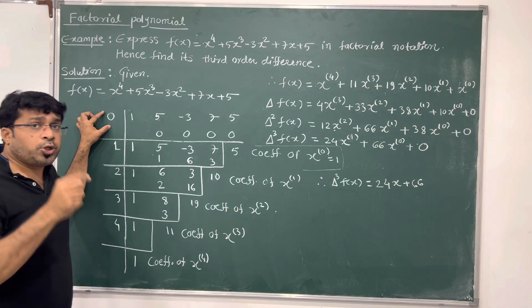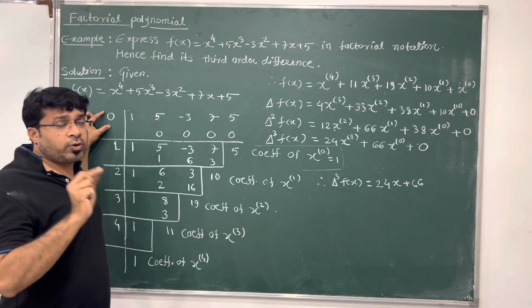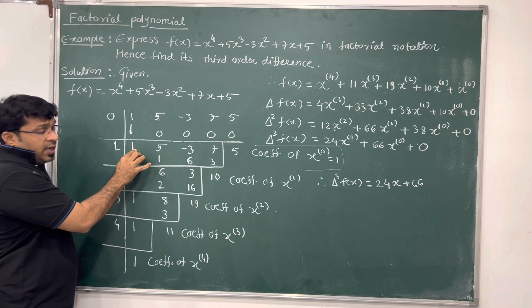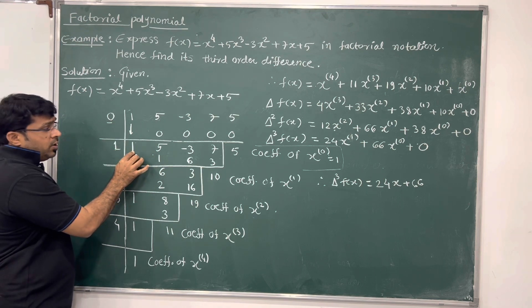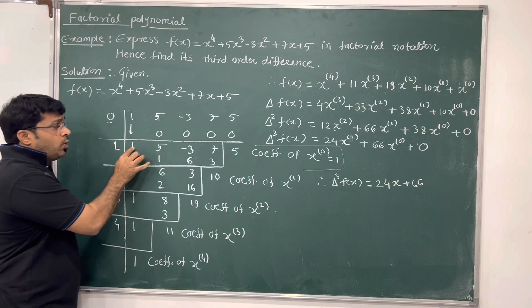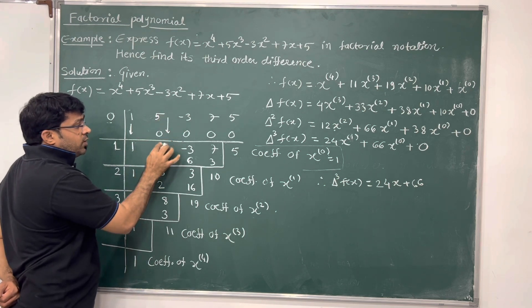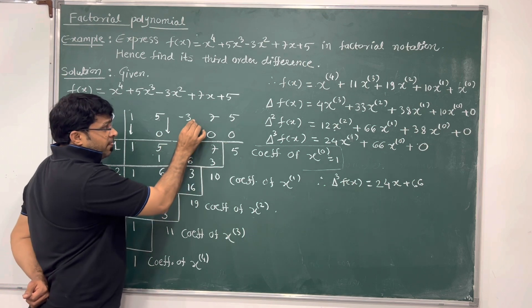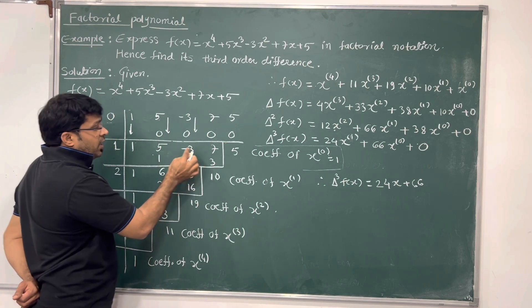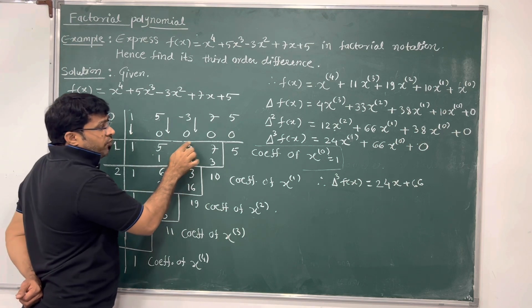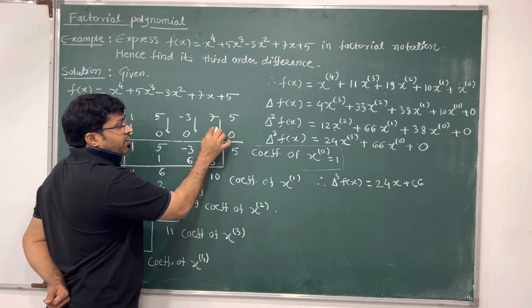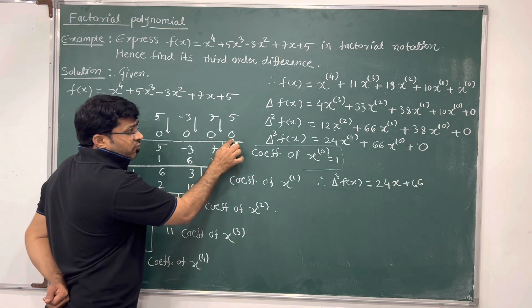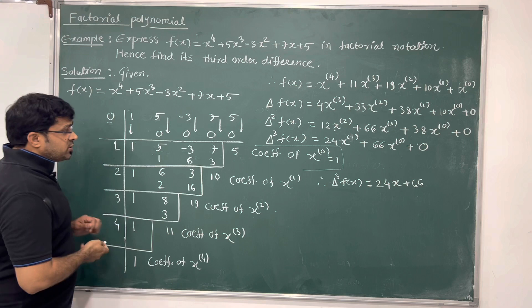Now we start dividing by 0. We write down 1 as it is. Then multiplication of 0 with 1 gives 0. Addition gives 5. Then 0 into 5 is 0, addition gives minus 3. Then 0 into minus 3 is 0, addition of 7 plus 0 gives 7. Then 0 into 7 is 0, addition gives 5. So the first row dividing by 0 is complete.